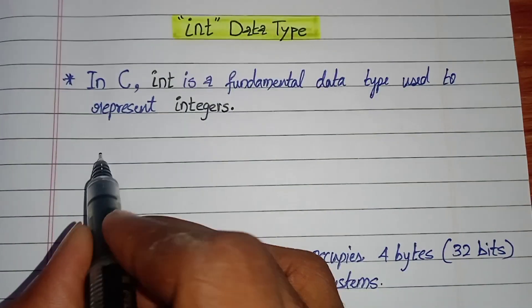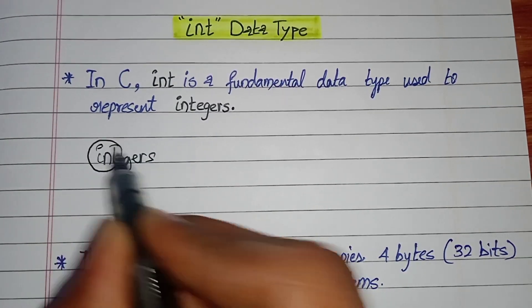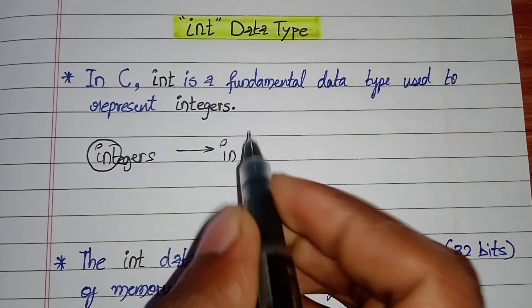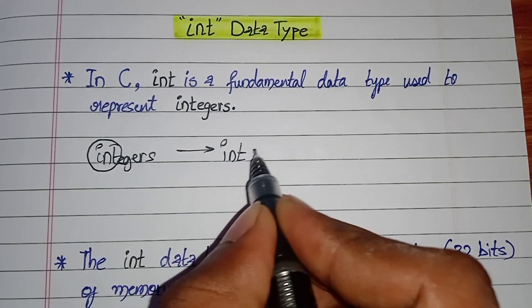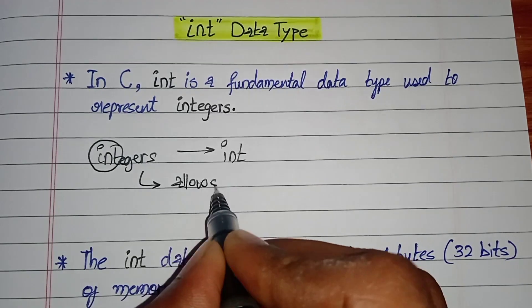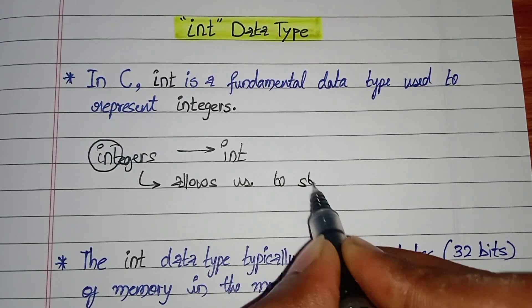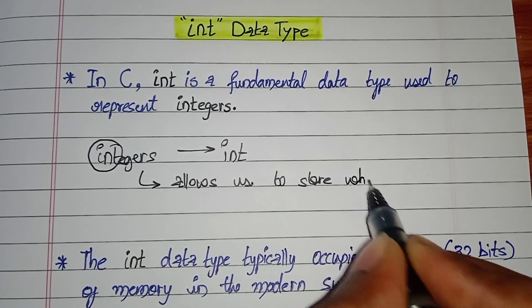So int is nothing but a fundamental data type which represents integers. From the word integers, int, we can see here. So int is nothing but integers. Integer allows you to store whole numbers.